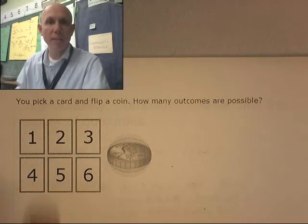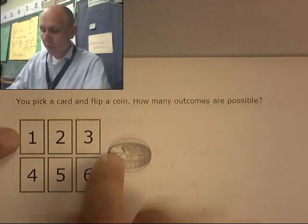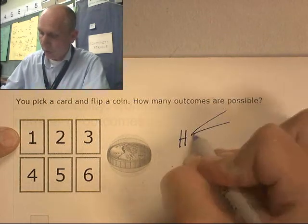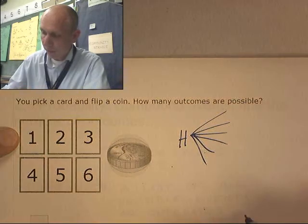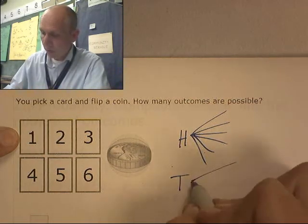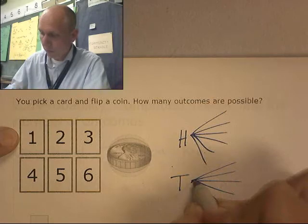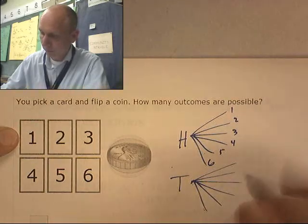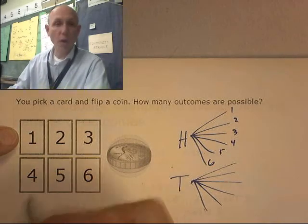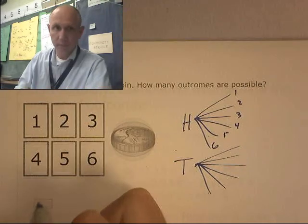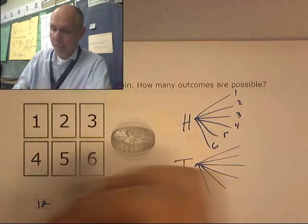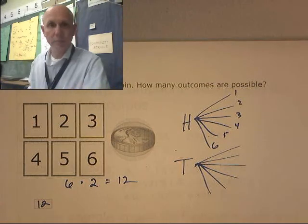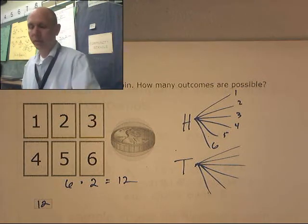You pick a card and flip a coin. How many possible outcomes? Heads with 1, 2, 3, 4, 5, 6 — and tails with 1, 2, 3, 4, 5, 6. That's 12 events. Or, look at this: 6 events times 2 equals 12. That's how many possible ways there are to make this happen.